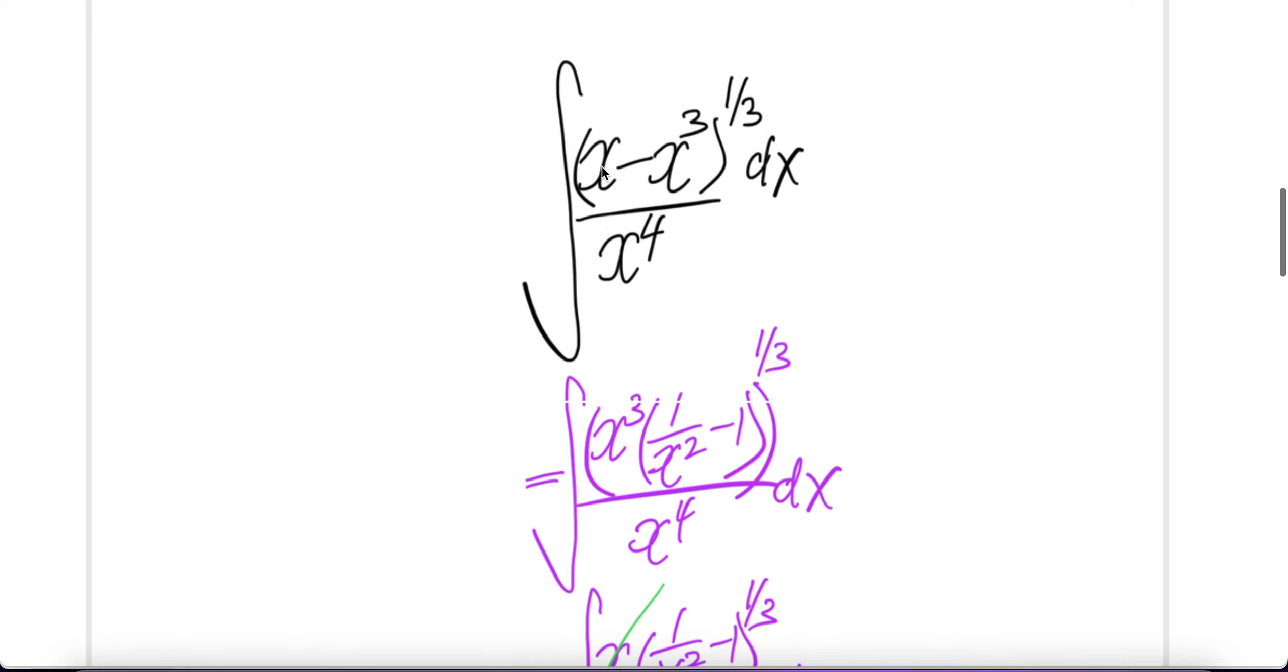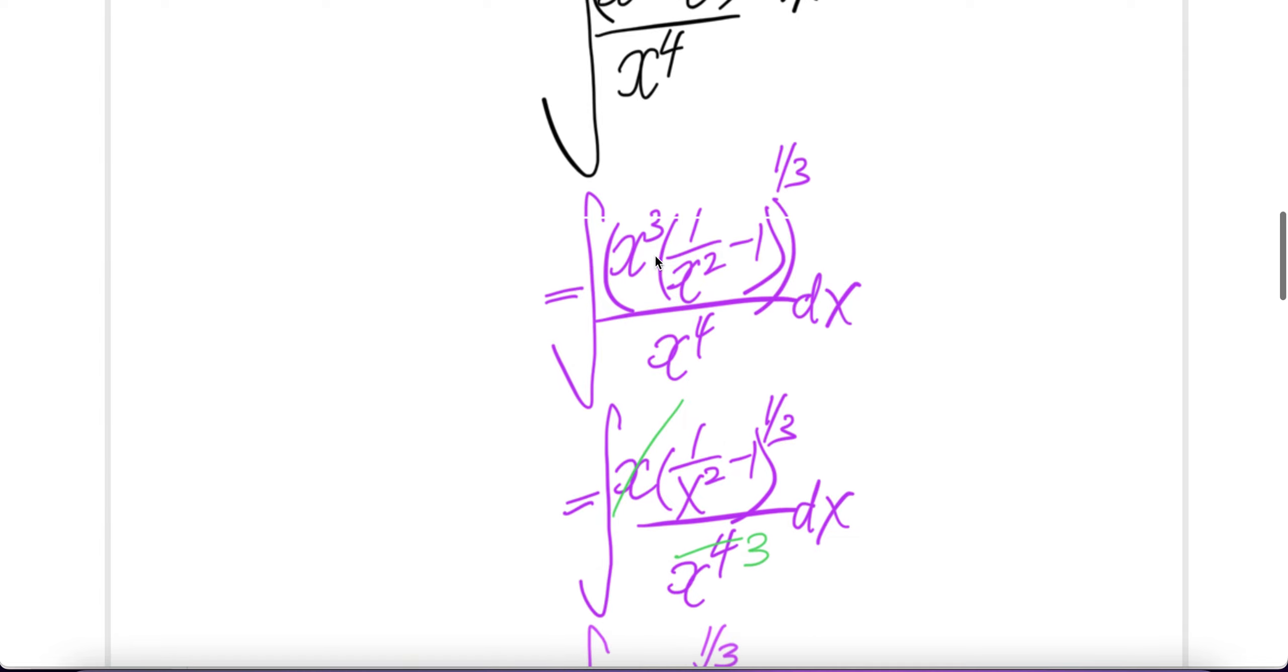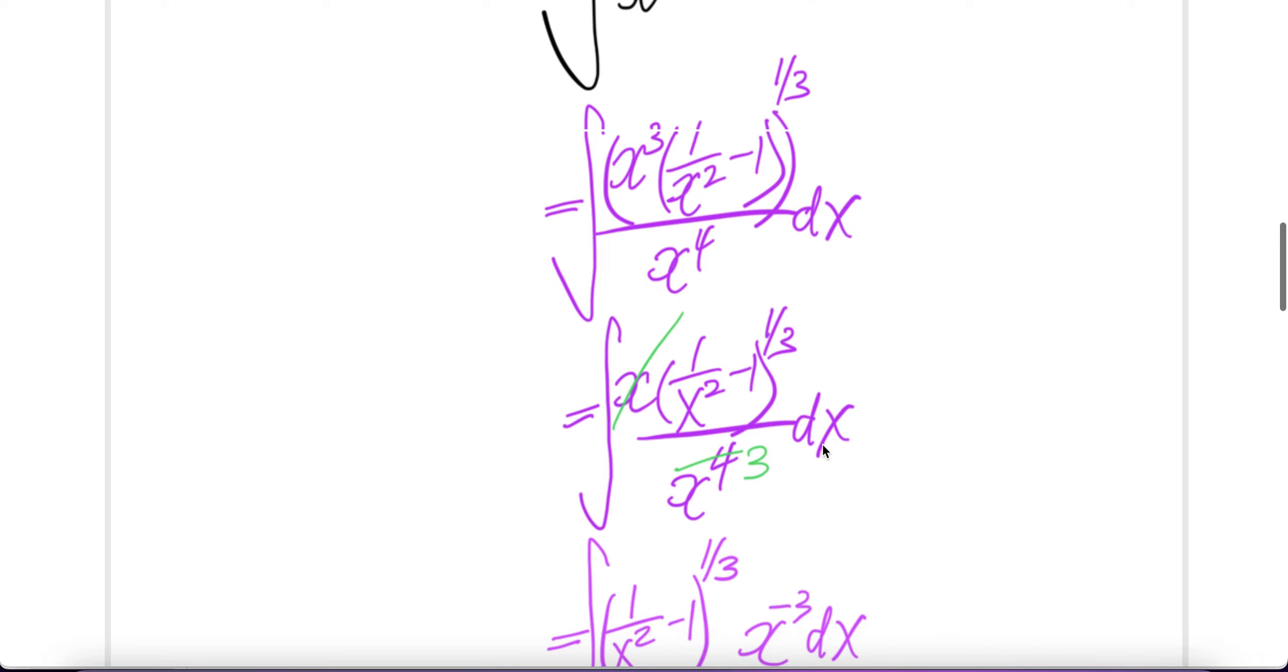Now factor out x cube and then this piece will become 1 over x square minus 1. Everything is the same. Now bring this out, x cube out with 1 third, 3 and 3 cancel, you get x. This piece will be to the power of 1 third and then x to the power of 4 dx.